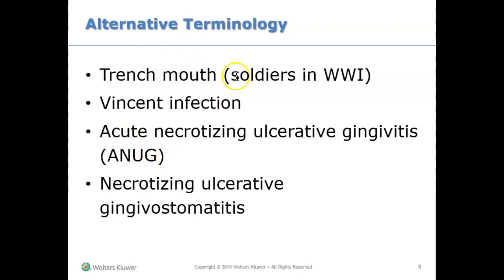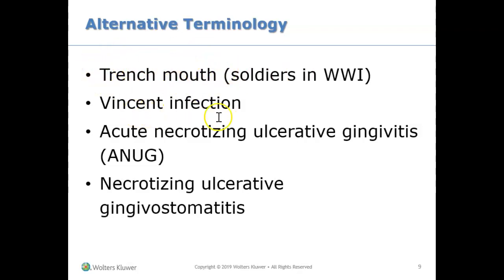Necrotizing periodontal disease has other names, such as 'trench mouth,' which was common in soldiers during World War I. These young male soldiers experienced underground severe trauma and severe stress, which is what typically triggers necrotizing periodontal diseases. It was also called Vincent infection, ANUG, and necrotizing ulcerative gingivostomatitis — all different terminology meaning the same thing.